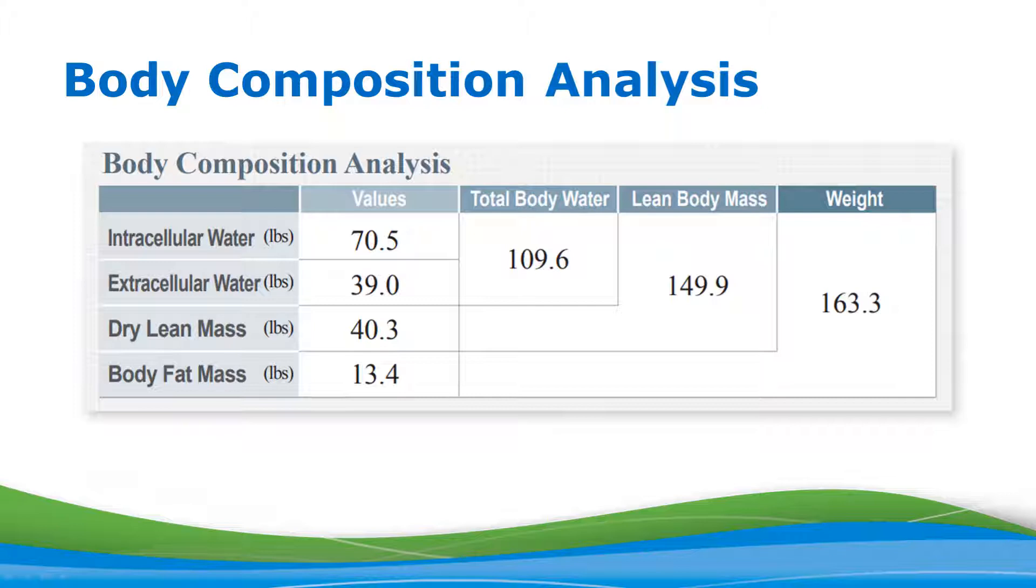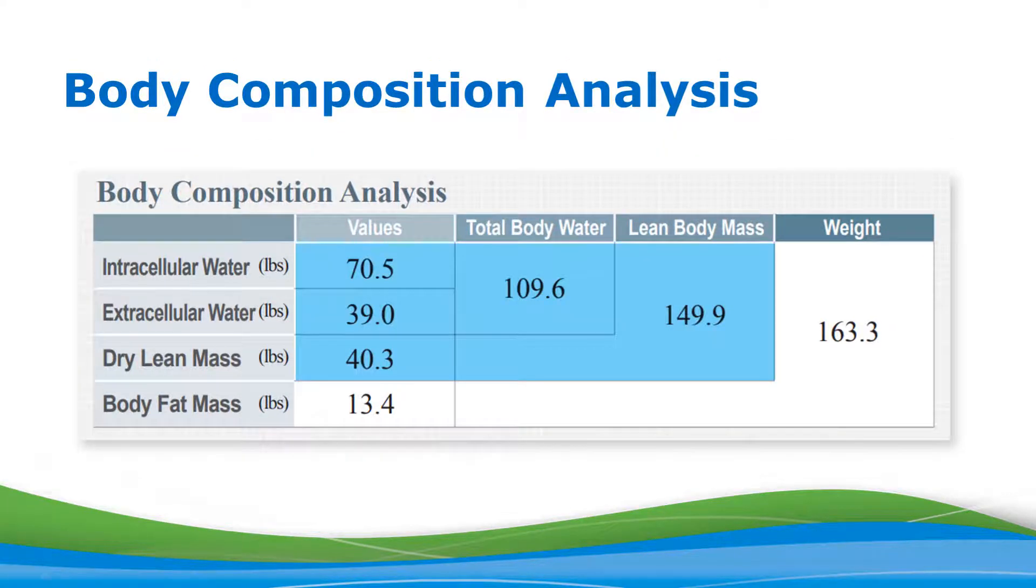Below the extracellular water, you have the dry lean mass value. Dry lean mass refers to the weight of the protein and mineral content in the body. In our example, it is 40.3 pounds. By adding intracellular water, extracellular water, and dry lean mass, you get total lean body mass. Our example here is 149.9 pounds.